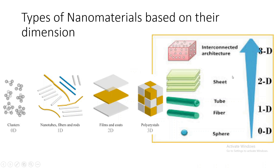Types of nanomaterials are classified based on their dimensions into 0D, 1D, 2D, and 3D. Point-like particles, as shown here, are considered 0D. Fiber-like structures such as nanofibers and nanotubes are considered 1D, meaning one of their three dimensions is in the nanometer range. In 2D nanomaterials, two of their dimensions are in the nanometer range. The other category is three-dimensional architecture.